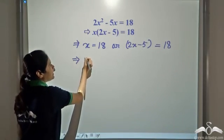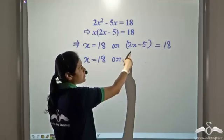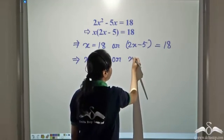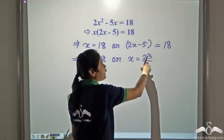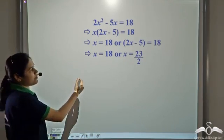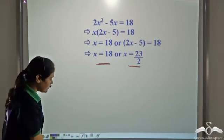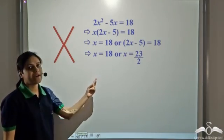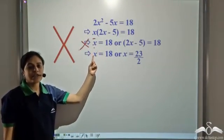From this, we get x equals 18, or from 2x minus 5 equals 18 we get 2x equals 18 plus 5, which is 23, so x equals 23 by 2. But if you substitute these values in the original equation and check, you will find that none of these is the correct solution. So where are we wrong? We are wrong in this step — we cannot use the zero product rule here.